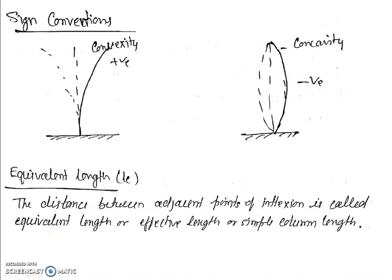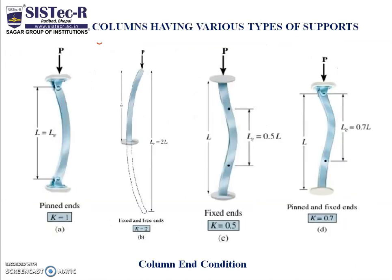The distance between the points of inflection is called the equivalent length. This is a simple column length. The end conditions, which are types of support, include pin joint, fixed and free, and one end fixed with the other as a pin joint. These are the conditions which we use when we go to the derivation.